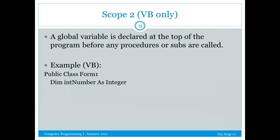So global variables are declared at the top of the program, right under public class, form one or whatever your form is named. This is discouraged. We only want to use global variables if there's absolutely no other way to do it. Global variables invite problems or issues into your code and can make your code exploitable by hackers. In fact, as you see here, VB only, C-sharp does not even support global variables because of those problems.